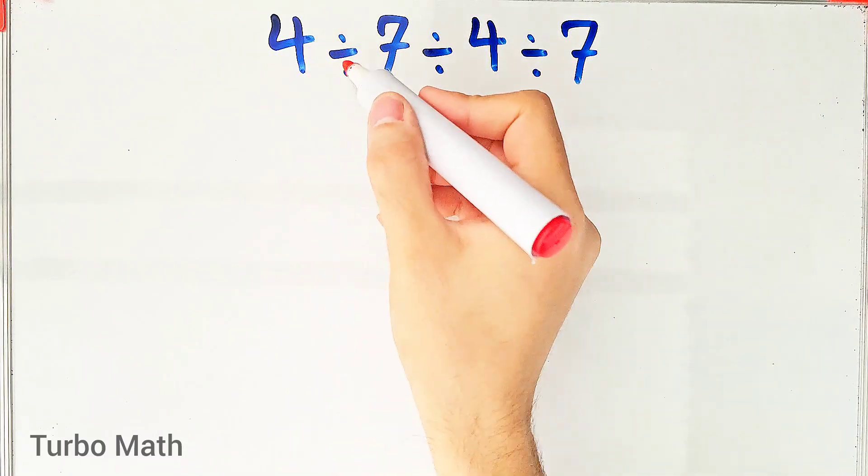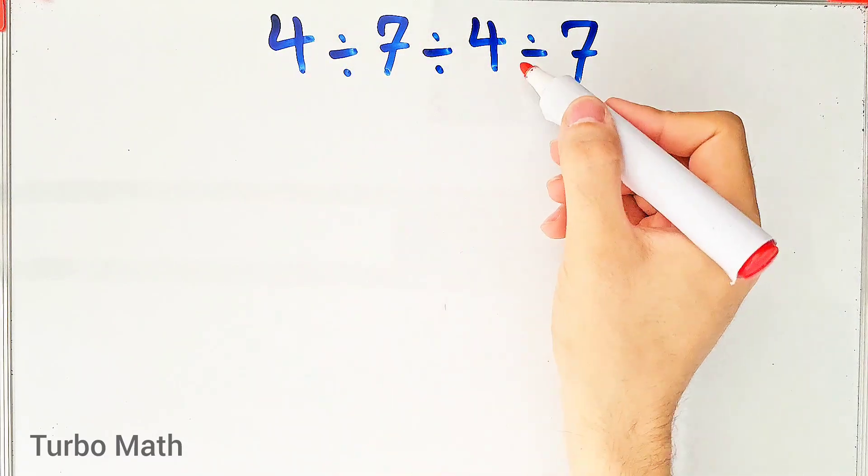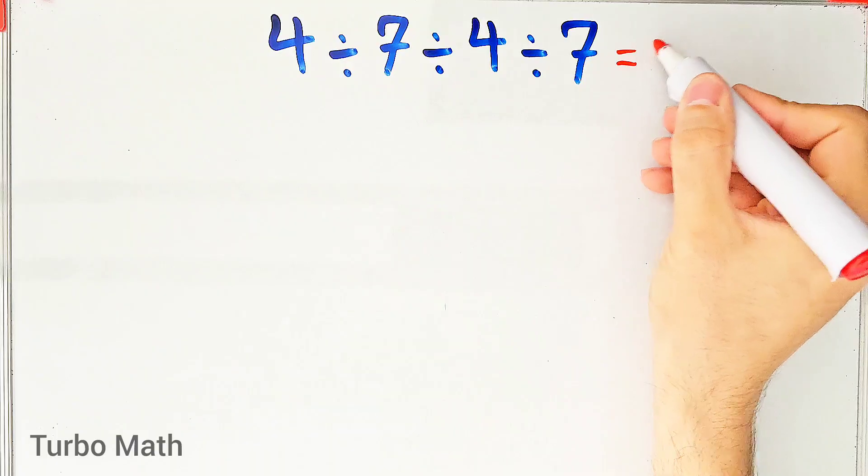4 divided by 7, then divided by 4, then divided by 7. What is the answer of this question?